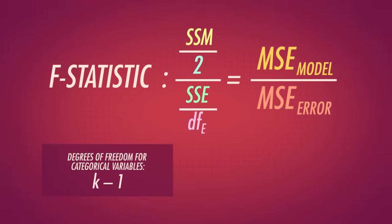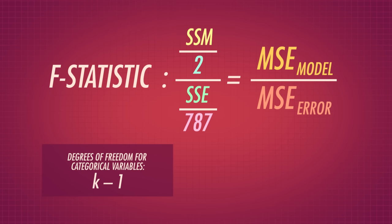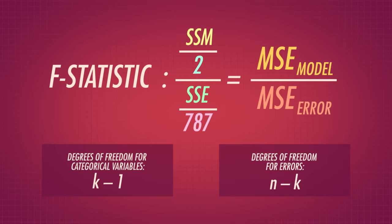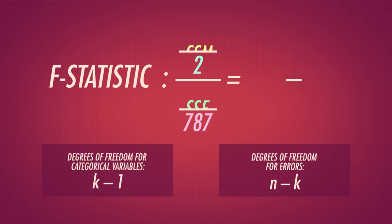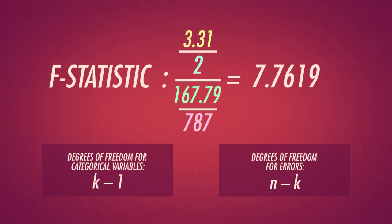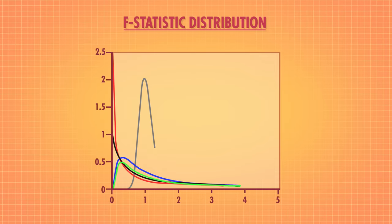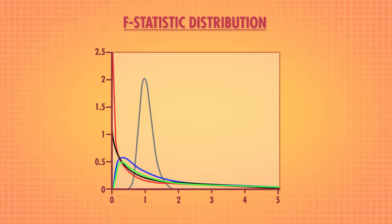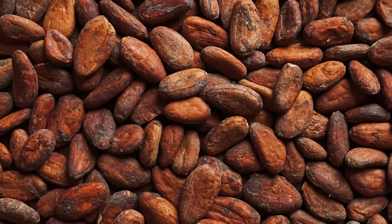Our ANOVA model has two degrees of freedom. In general, the formula for degrees of freedom for categorical variables — like cocoa bean types — in an ANOVA is k minus 1, where k is the number of groups. In our case we have three groups. Our sums of squares for error has 787 degrees of freedom, because we originally had 790 data points but calculated three means. The general formula for degrees of freedom for errors is n minus k. For our test, we got an F statistic of 7.7619. Using the F distribution to find our p-value, we want to know whether the effect of bean type on chocolate bar ratings is significant. We got a p-value of 0.000459 — small enough to reject the null. So we found evidence that beans influence the chocolate bar ratings.